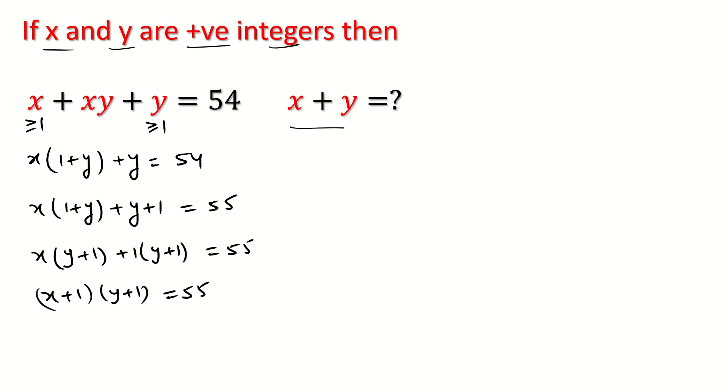Now 55 can be written as 1 times 55, 5 times 11, 11 times 5, and 55 times 1. And we can say x plus 1 is greater than or equal to 2, and y plus 1 is also greater than or equal to 2, because x and y are both greater than or equal to 1.